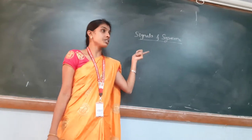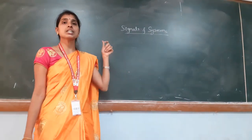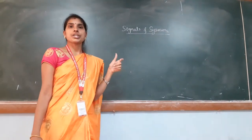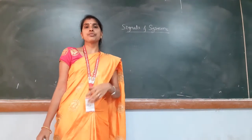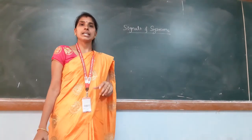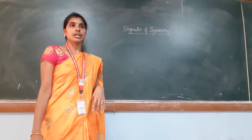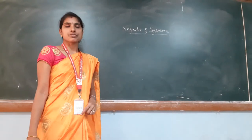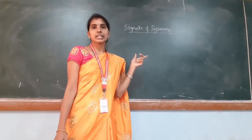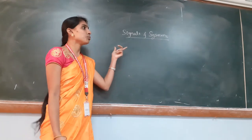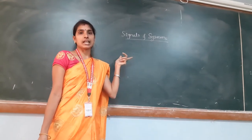What are the five units in signals and systems? The first unit is signal analysis. The second unit is Fourier series and Fourier transform. The third unit is the linear time invariant system. The fourth unit is the Z-transform, and the fifth unit is the sampling theorem. In this video, we have to learn about the first unit, that is signal analysis.